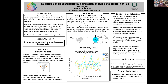Once the trials are redone and if gap detection can be successfully manipulated, this would confirm that auditory cortex neurons are responsible for gap detection. Understanding these pathways could help improve quality of life for people with speech processing deficits.